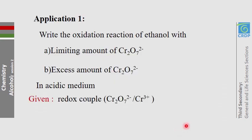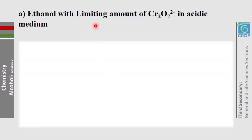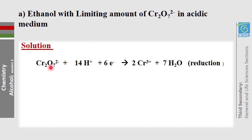Application 1: Write the oxidation reaction of ethanol with dichromate ions (Cr₂O₇²⁻) in acidic medium. You are given the redox couples involved. Balance the reduction half-reaction: Cr₂O₇²⁻ → 2Cr³⁺; add 7H₂O, then 14H⁺, and 6 electrons.